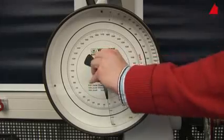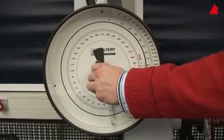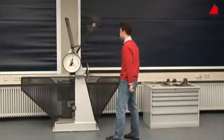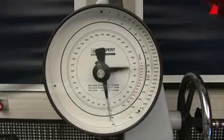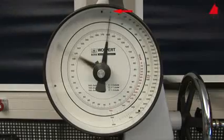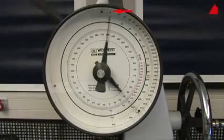In order to do this, he turns the drag indicator downwards and releases the pendulum without a test specimen. The drag indicator stops at position zero. This proves that the pendulum has the correct starting position and that the friction is correctly compensated.